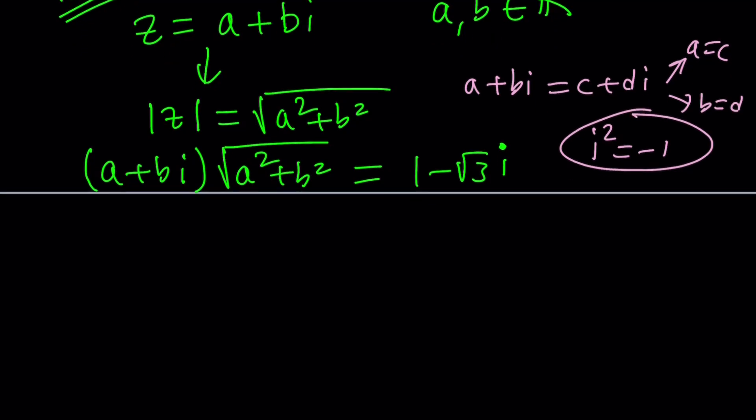So, what do we do? Distribute and separate the real parts and imaginary parts because we're going to set up an equality. Distribute the A and distribute the B and multiply by I. Some people put the I before it. Doesn't matter. No big deal. And this equals 1 minus root 3I.